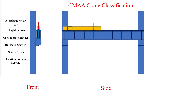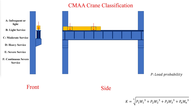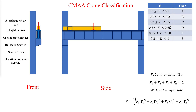The mean effective load factor K is a concept used to categorize cranes within these classes. K is a ratio that represents the average load a crane carries in relation to its rated capacity, taking into account the variability of loads over its operational life. P is the load probability expressed as a ratio of cycles under each load magnitude condition to the total cycles, and the sum of all P must equal 1. W is the load magnitude expressed as a ratio of each lifted load to the rated capacity; operation with no lifted load and the weight of any attachment must be included. The corresponding mean effective load factor for each class can be approximated as shown in this table.